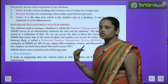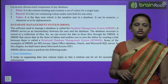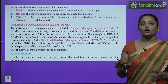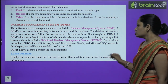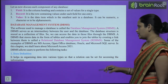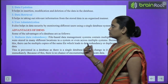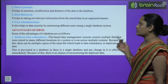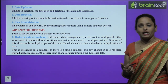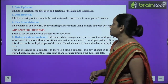DBMS bahut saare kaam karta hai. Pehla hai data definition — it helps in organizing data into various groups, data ko alag-alag groups mein organize karta hai, so that the relation can be set for accessing the information. Phir aata hai data updation — it helps in insertion, modification, and deletion of data. Data updation mein hum data ko insert kar sakte hain, modify kar sakte hain, changes kar sakte hain, aur unwanted data ko delete bhi kar sakte hain.